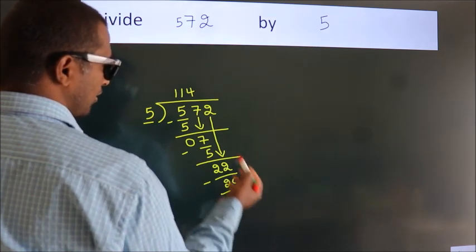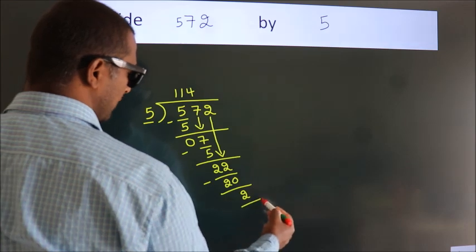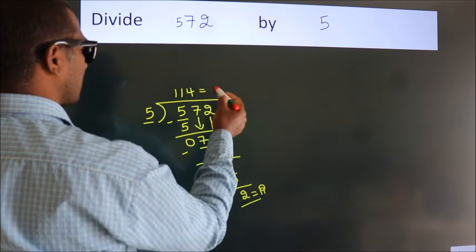After this, no more numbers to bring it down. So we stop here. This is our remainder. This is our quotient.